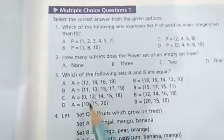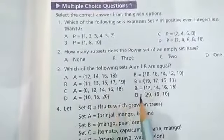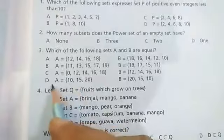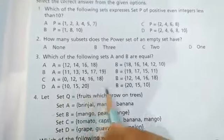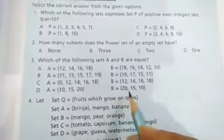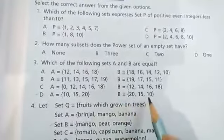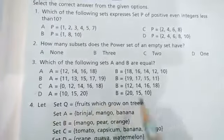Which of the following sets A and B are equal? Two sets are given. So in this, option number D: A = {10, 15, 20} and B = {20, 15, 10}. These two sets are equal, so option D is the correct answer.